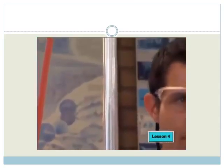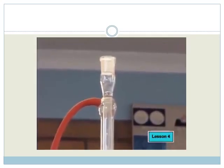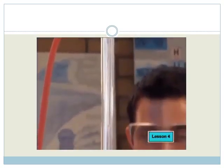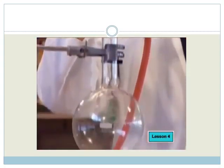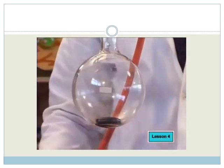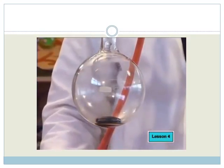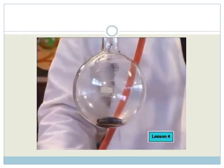This is called a reflux apparatus. We heat the mixture in the bottom of the round bottom flask until it boils. The gases rise into the condenser where they become liquid again by condensation and fall back into the mixture. Refluxing allows us to keep the reaction hot and boiling without losing any of the liquids inside. So let's get going.